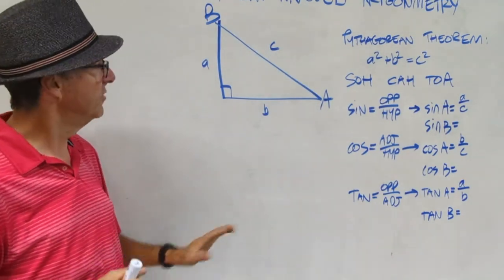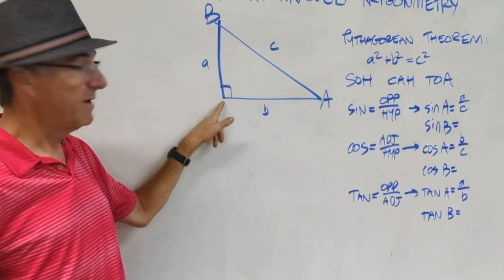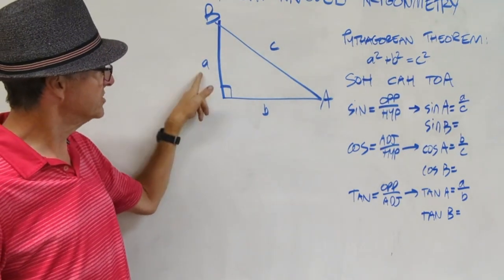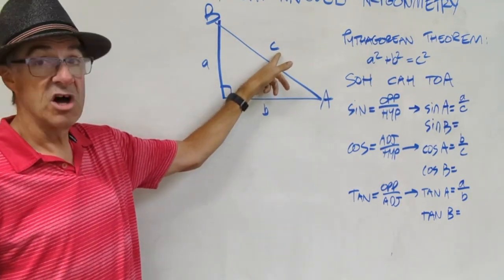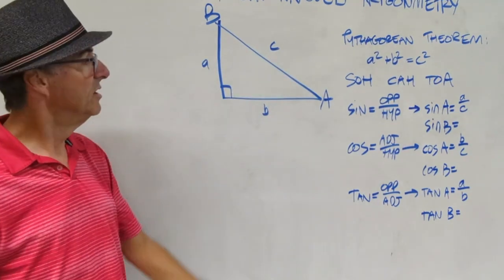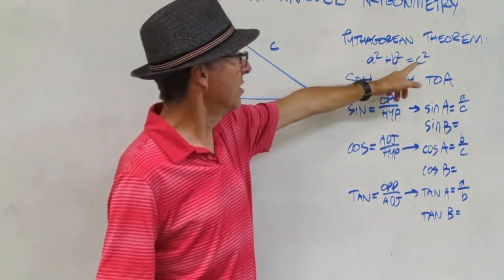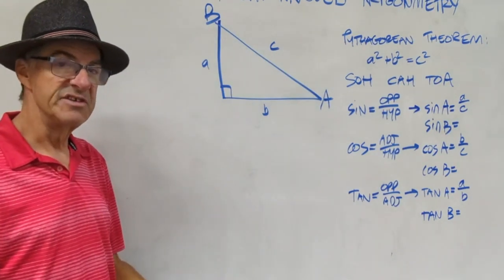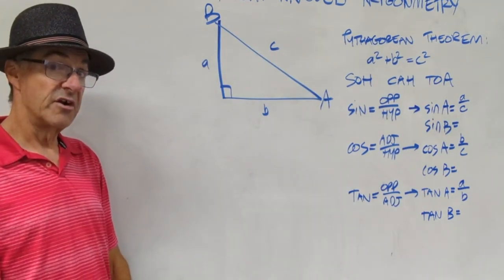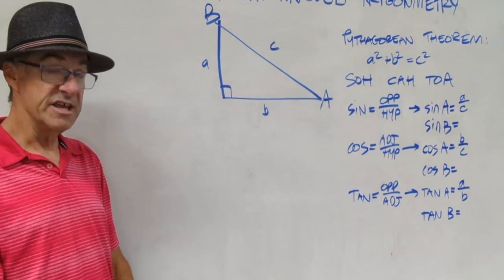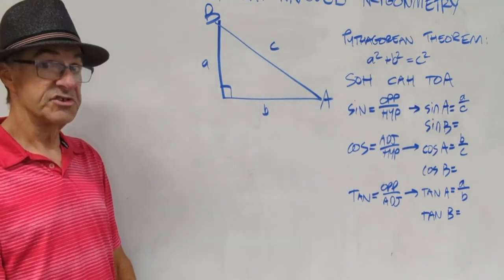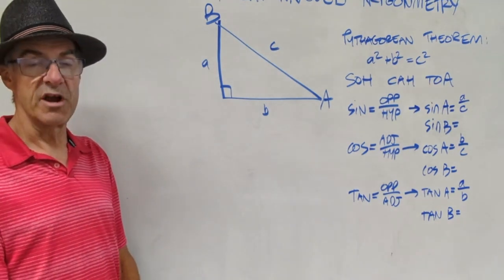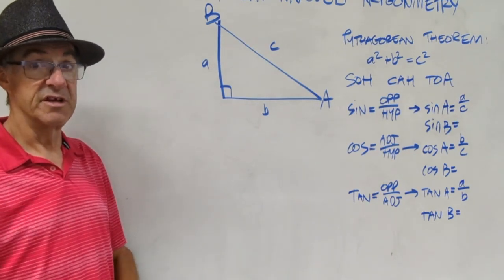I just want to quickly review it. In a right triangle with a 90 degree angle, I have two shorter sides, A and B, and then I have my long side, which is called the hypotenuse. So A squared plus B squared equals C squared. The way we say that in words is that the sum of the squares of the shorter sides are equal to the square of the hypotenuse in a right triangle. That's assumed prior knowledge. Let's move on to trigonometry.